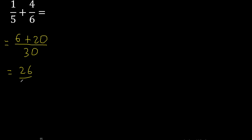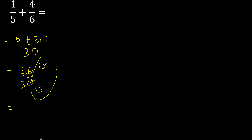26, 30. It can be simplified because it can be divided by the same number. Divided by 2 is 13, 15. Cannot be divided by the same number, therefore finish.